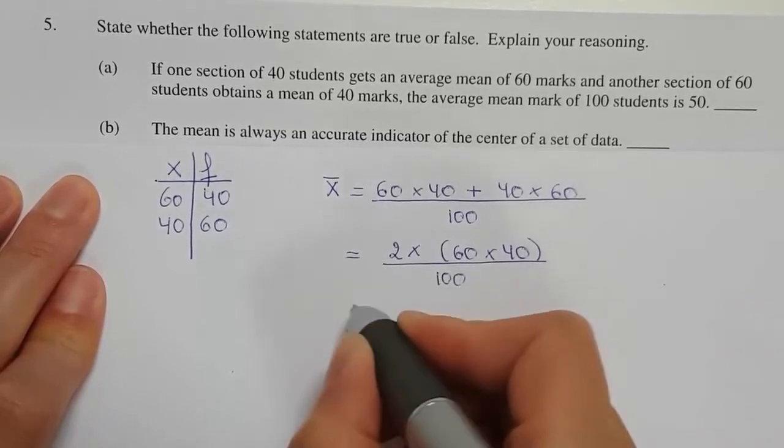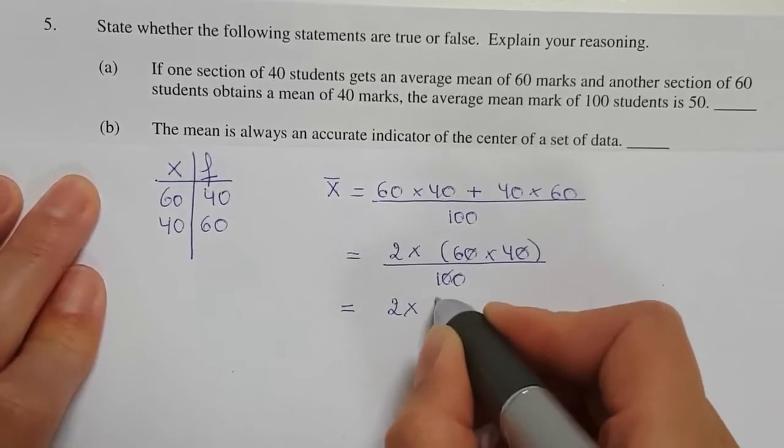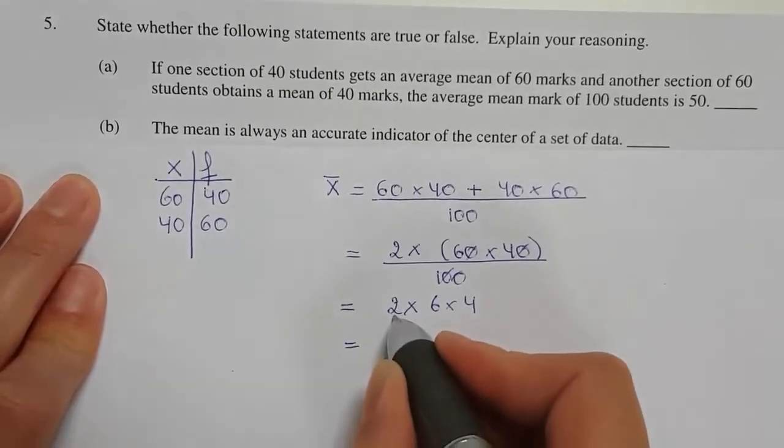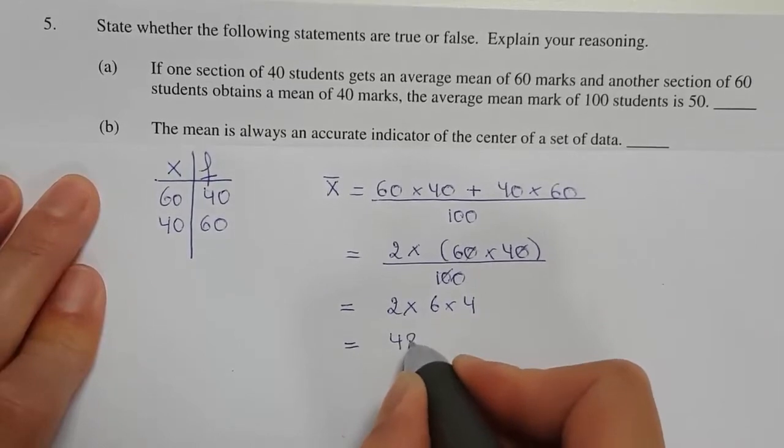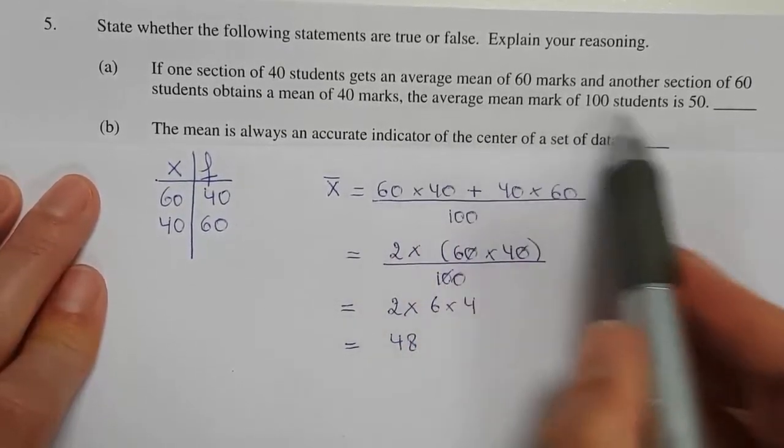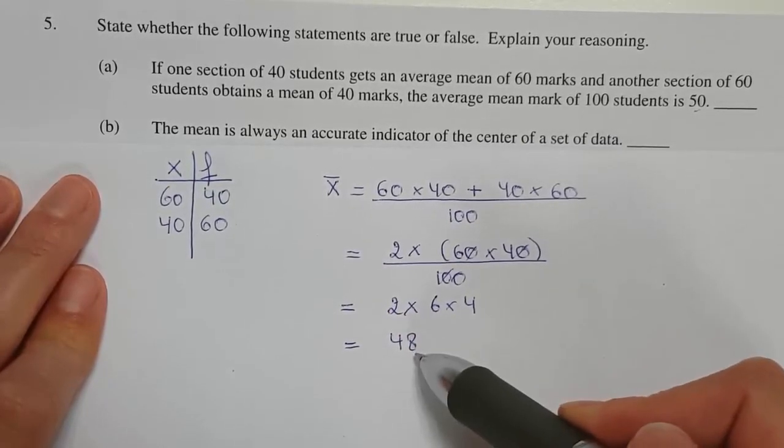So 2 times 6 times 4 equals 24, times 2 equals 48. The mean is 48. So is the mean 50? Well, I'm getting a mean of 48.